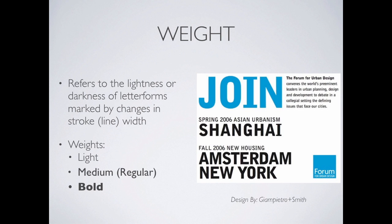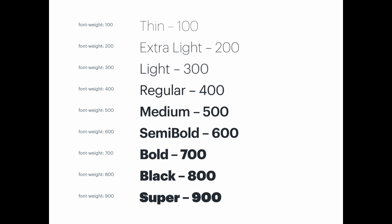We might have a light version of a font, which is very thin; a regular or medium version in the middle; and then a bold version, which is very thick. Looking at the list: thin, extra light, light, regular, medium, semi-bold, bold, black, and super. This can all be within a font family — a designed set of typefaces. We can go all the way from thin up to super, and different people have different opinions about where certain weights are appropriate.